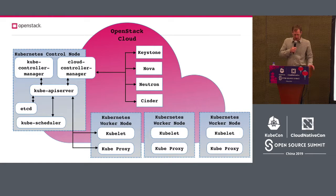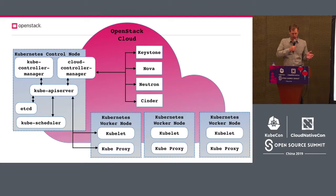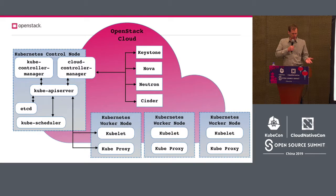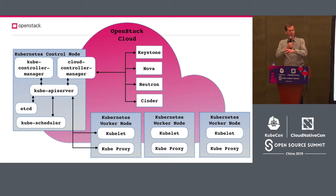Let's look at how this works in practice. In the OpenStack cloud we have Keystone, Nova, Neutron, and Cinder. On top of that cloud, you have two major flavors of nodes: a Kubernetes controller node running your Kube controller manager and cloud controller manager — the portion that connects to the cloud provider and offers integration between Kubernetes and OpenStack — plus a Kube API server communicating with etcd to manage cluster state, and a Kube scheduler looking at resources within Nova and the Kubernetes worker nodes. Then you have worker nodes all running kubelet and kube-proxy, which you can scale and manage just as on any other cloud.